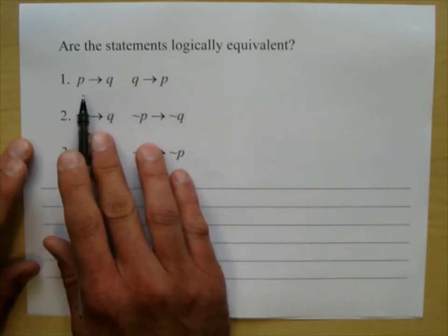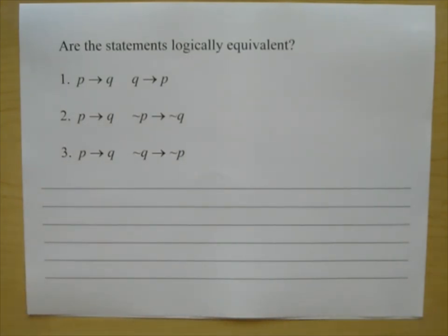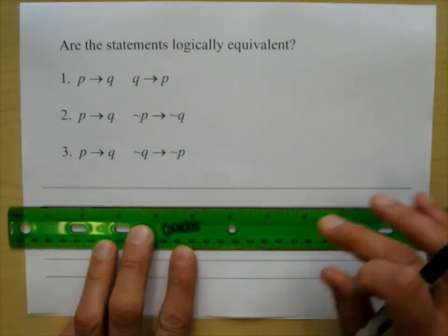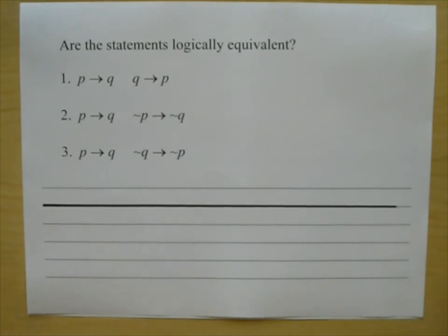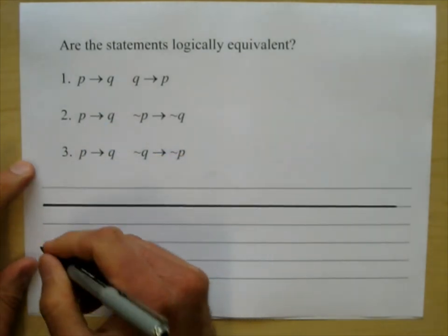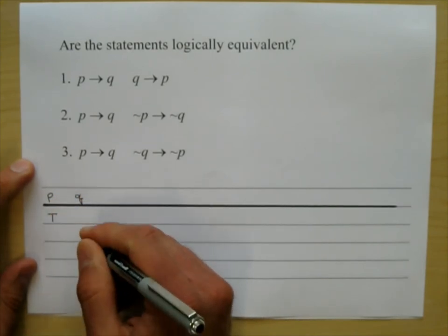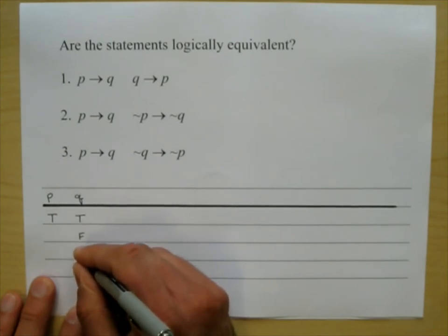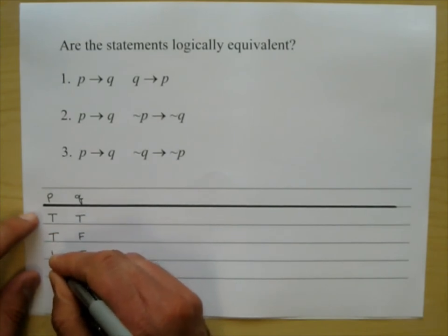Let's put 'if P then Q' on the truth table first. I need columns for P and Q. P alternates by two: true, true, false, false. Q alternates by one: true, false, true, false.